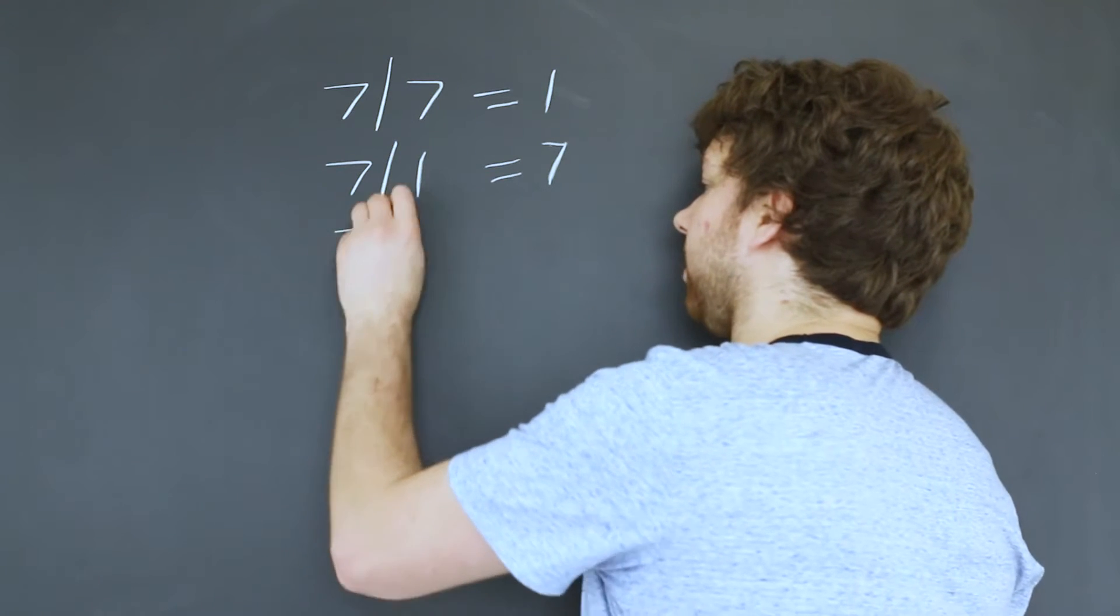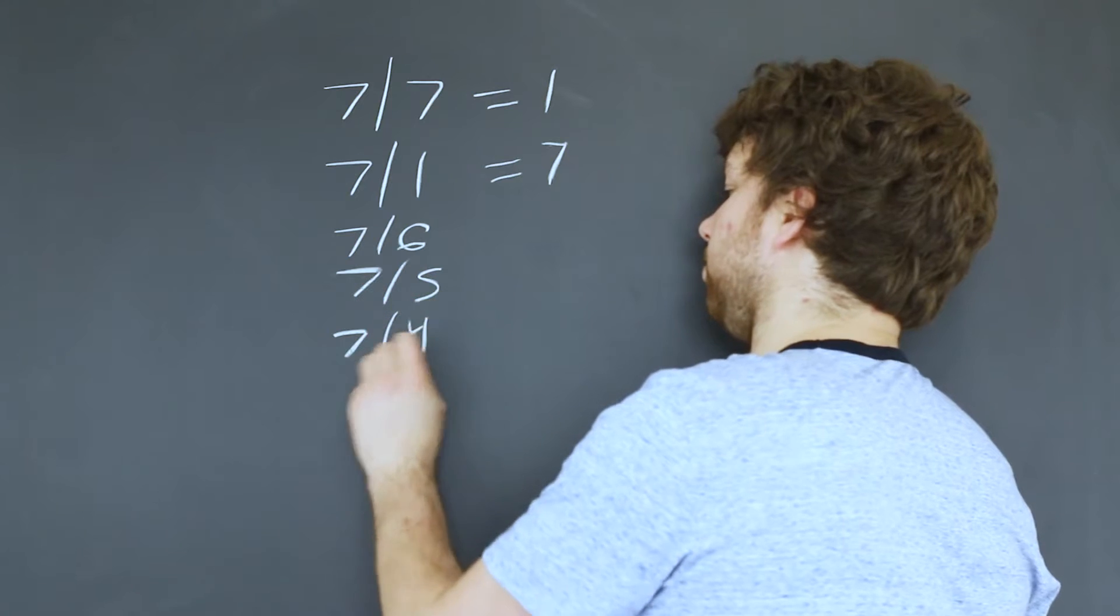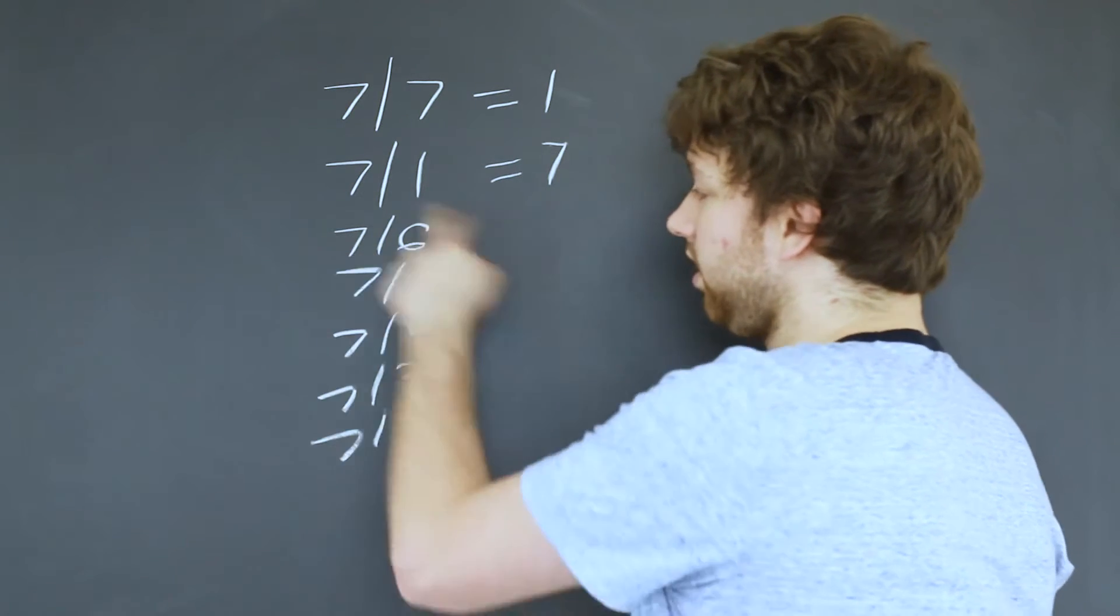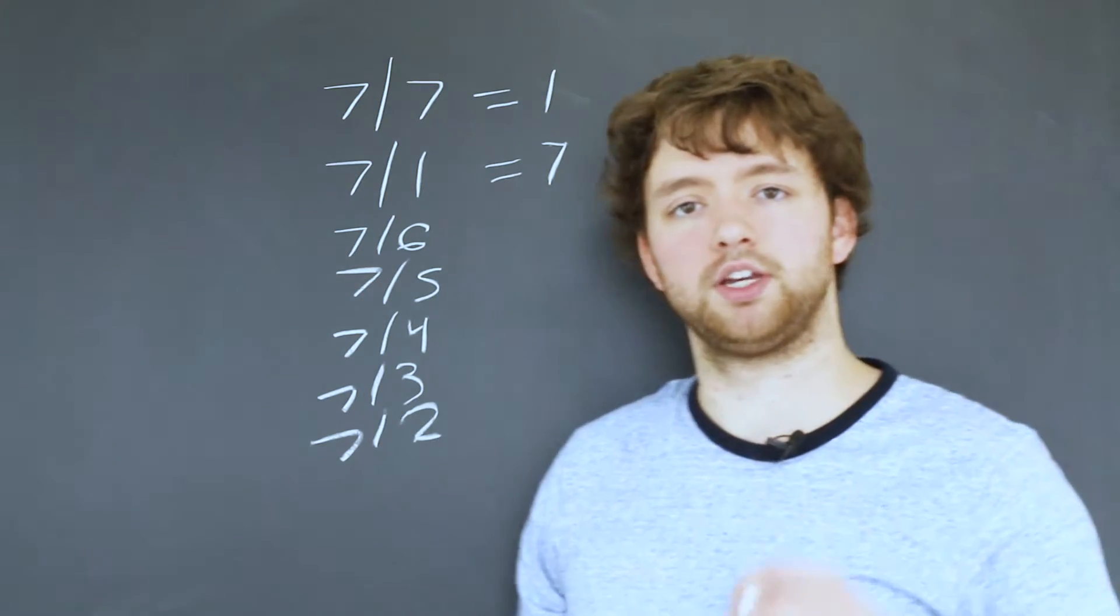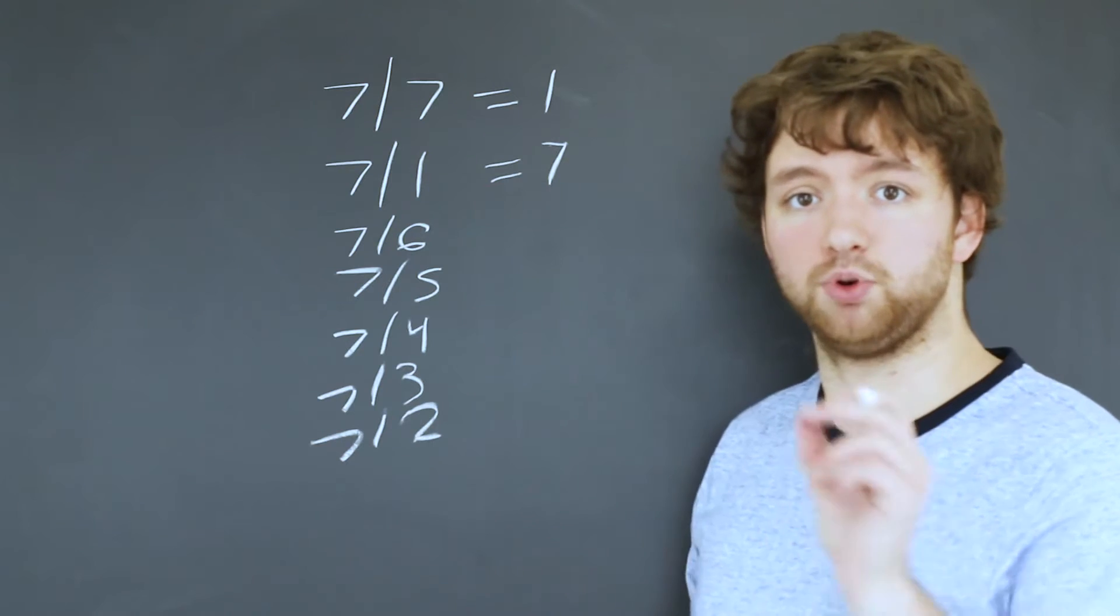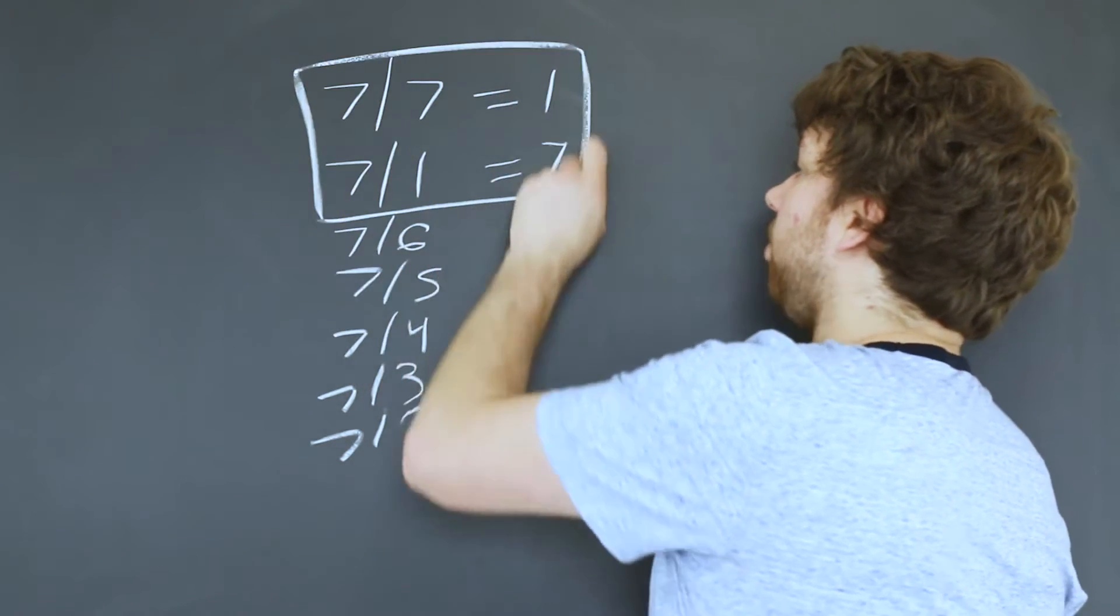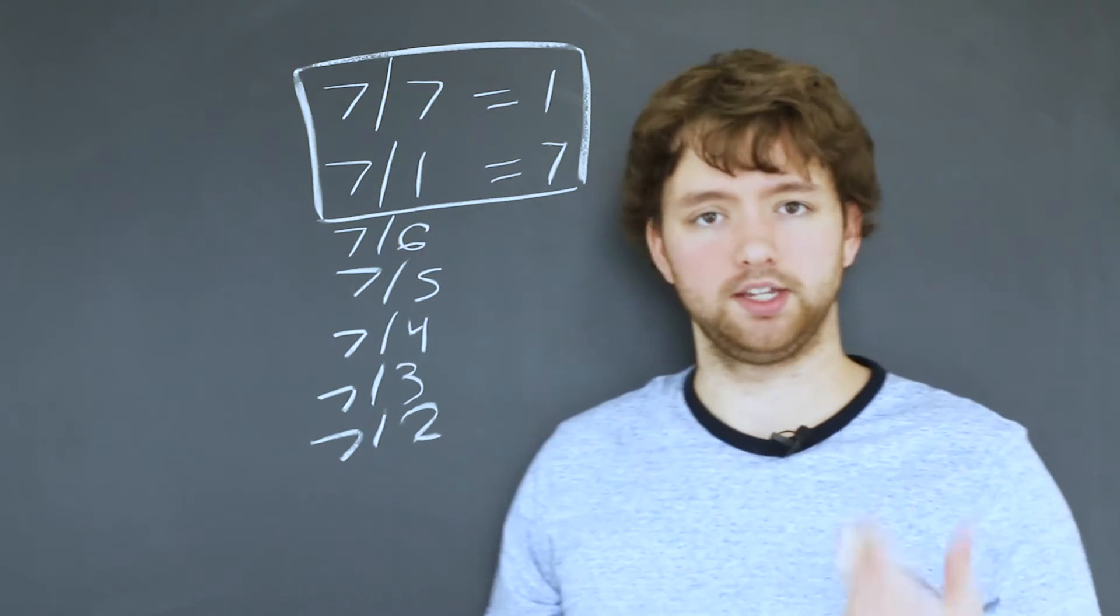So if we take seven divided by six, seven divided by five, all the way down to seven divided by two, there's something in here that tells us whether or not a number is prime. A prime number is only divisible to give a whole number in those two situations. All the other numbers will give us a remainder when doing integer division.